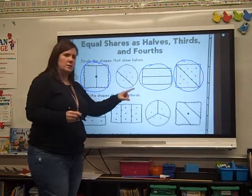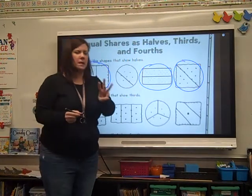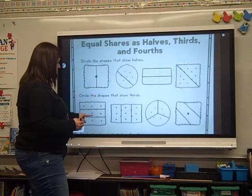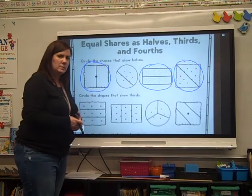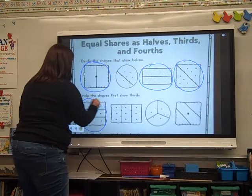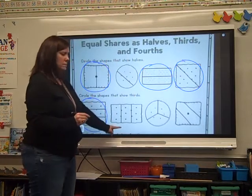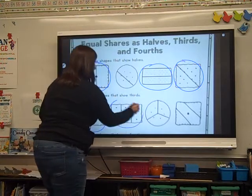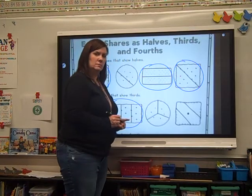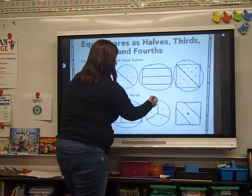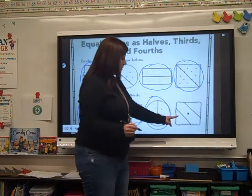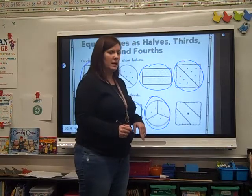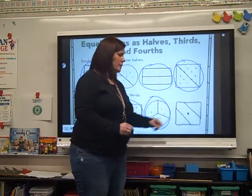Circle the shapes that show thirds, so now I have to have three equal pieces. Let's look at this first one — it has three pieces. Do all three pieces look like they're the same amount? Yeah, they do. What about this one? They're all the same, aren't they? What about this one? Yeah, it's all the same. What about this one? Are all three pieces the same? No — that middle piece is much bigger, isn't it? So that is not cut into thirds.